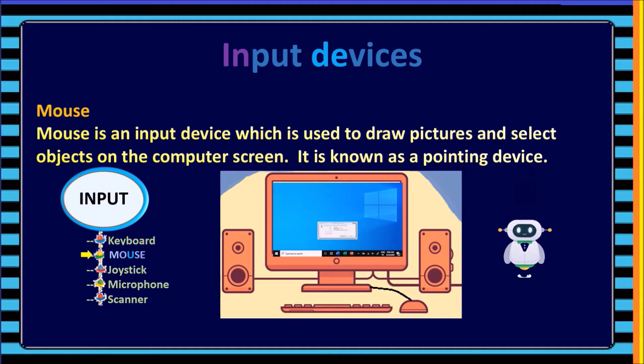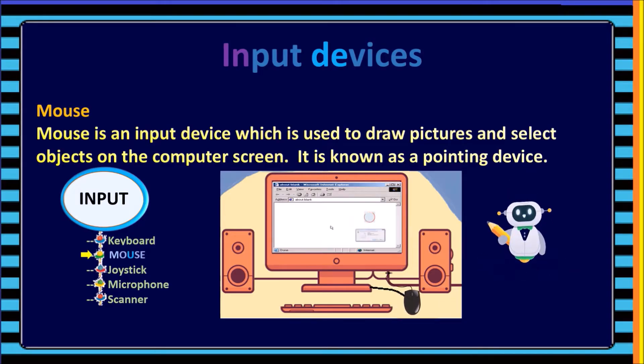Mouse. A mouse is an input device which is used to draw pictures and select objects on the computer screen. It is also known as a pointing device.